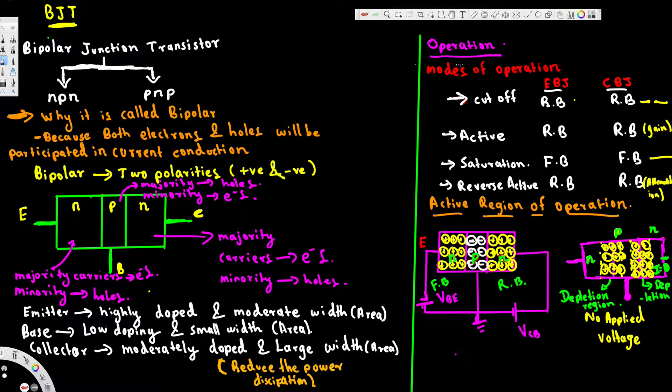Let's look at the operation modes. There are four types of modes. The first one is cutoff. Cutoff mode is when we have both the emitter and collector in reverse bias. It's the cutoff region, open like this.